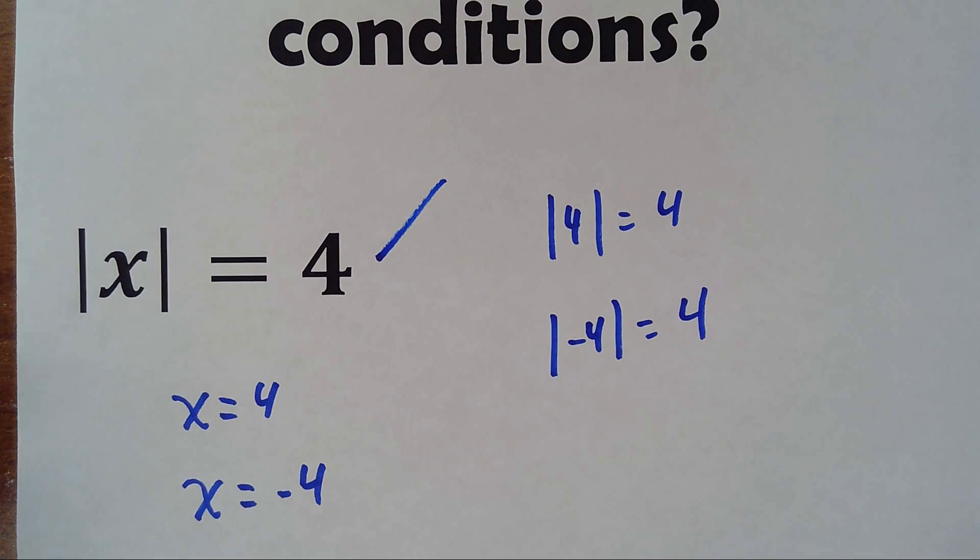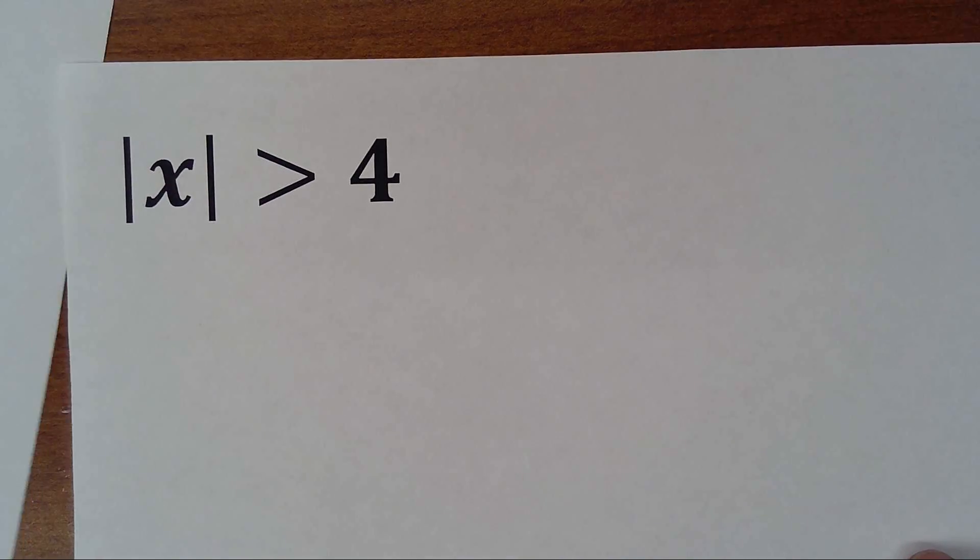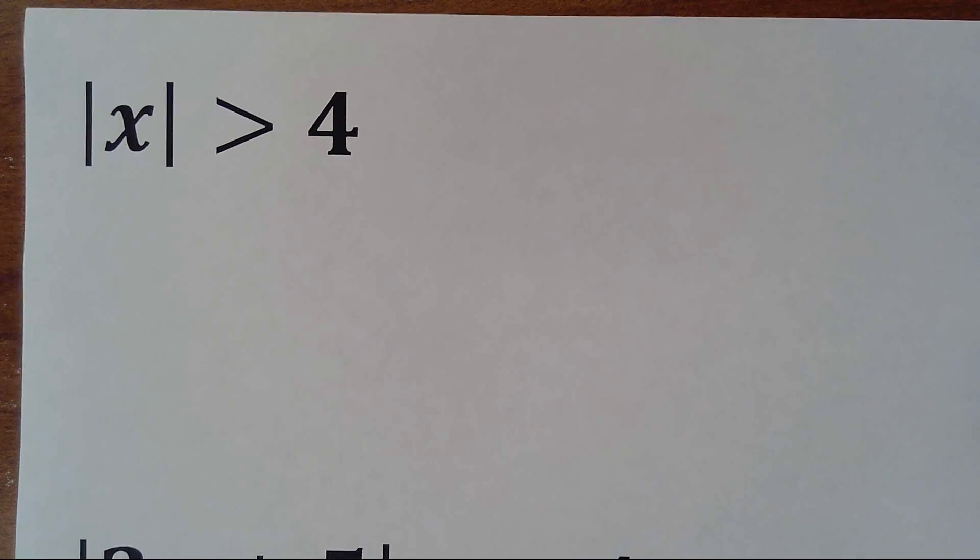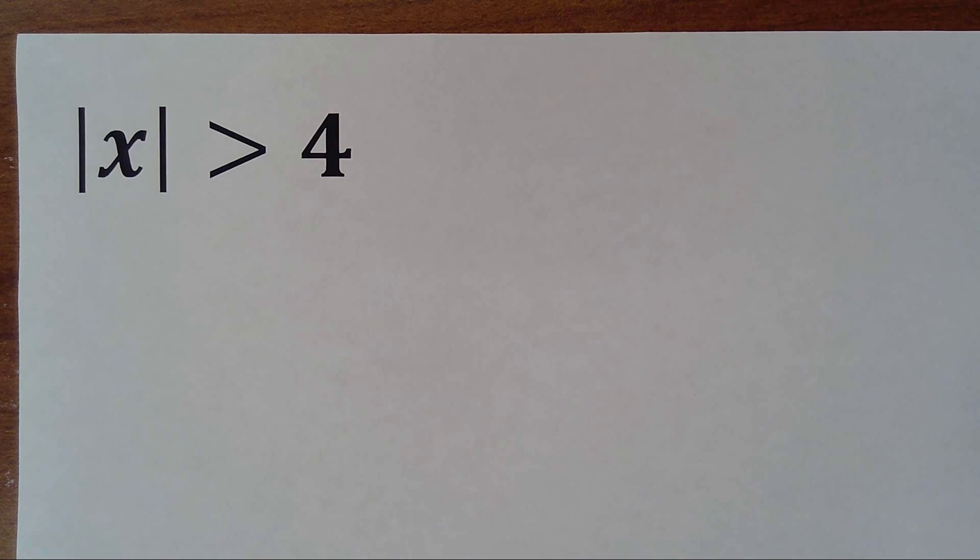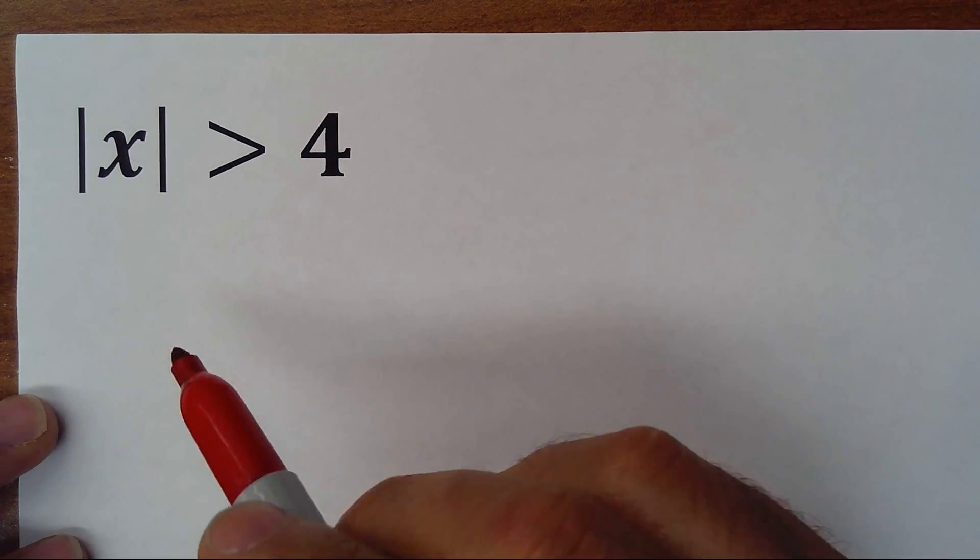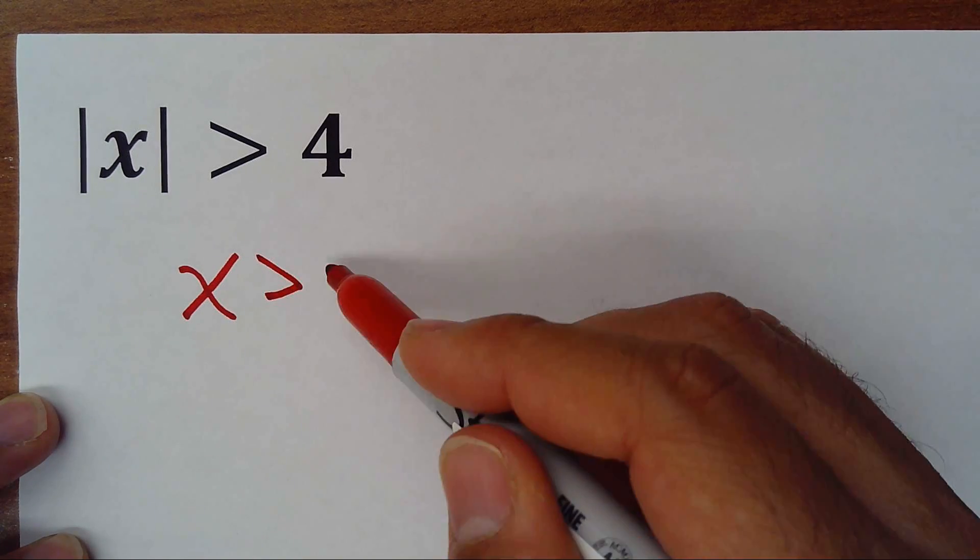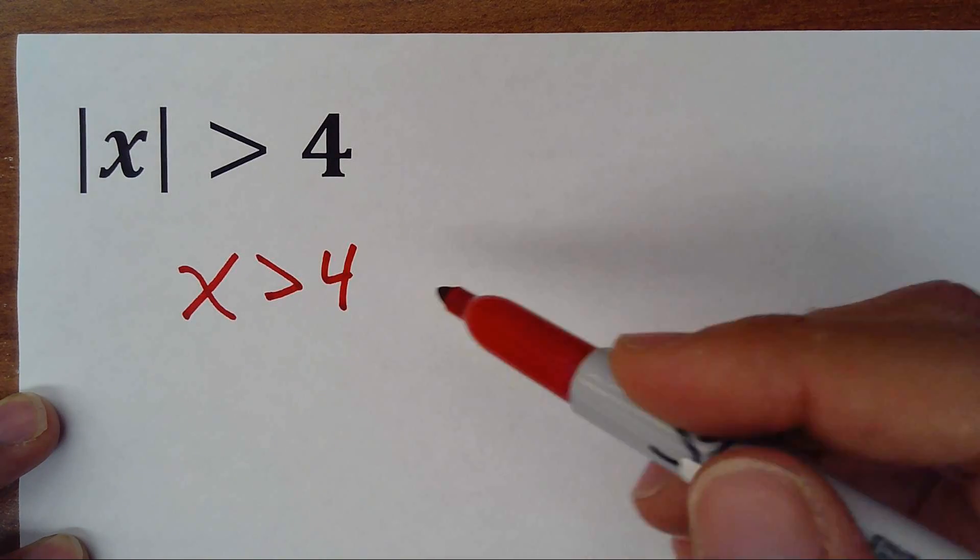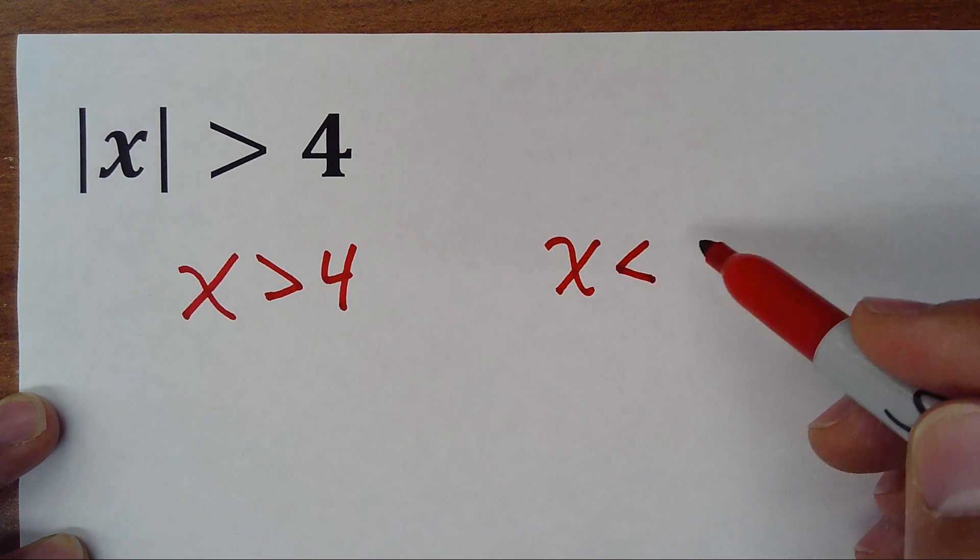So how would that work in inequalities? Let's go over there. We have here the inequality absolute value of x is greater than 4. What does it mean? It means that x could be any number greater than 4, but also x could be any number less than negative 4.